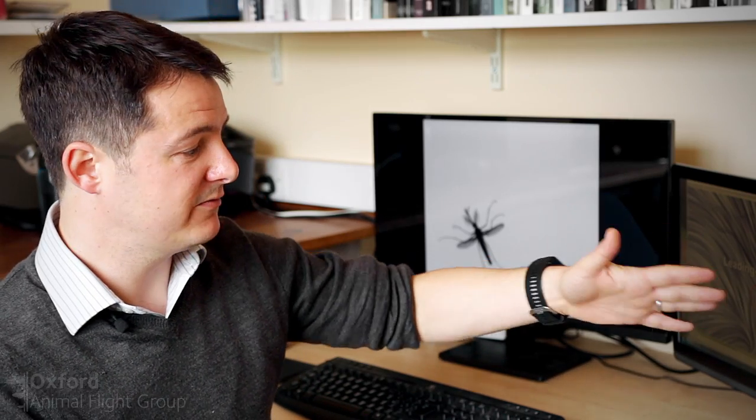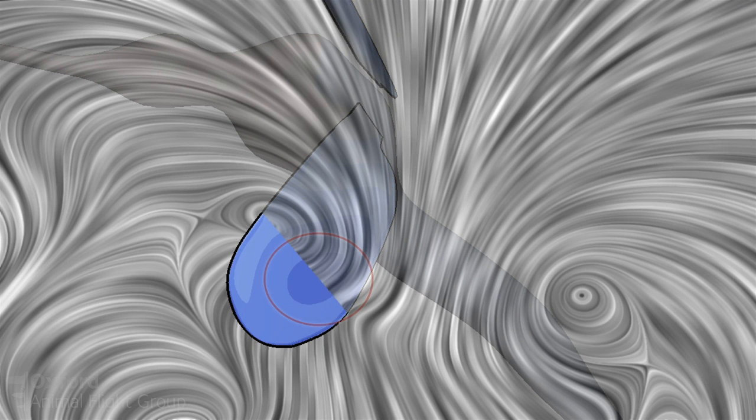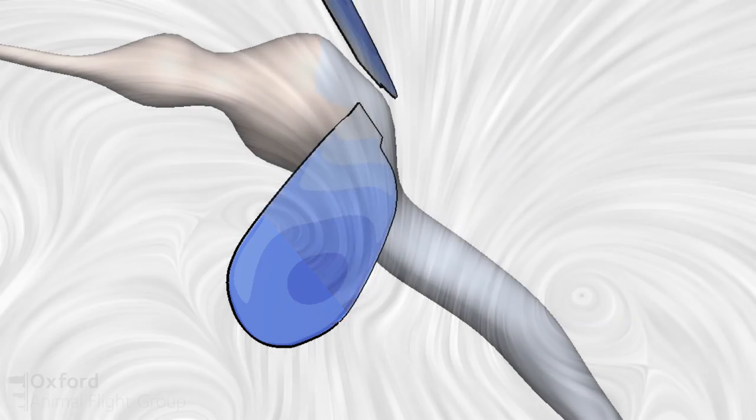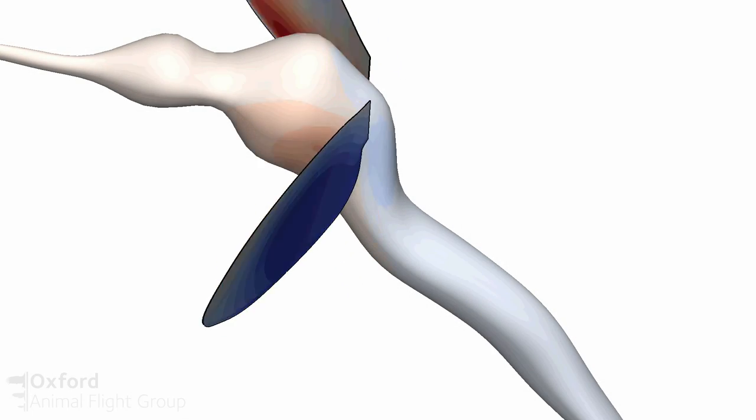And the reason why mosquitoes can do this is down to the really finely tuned and precise rotation of the wing at the end of each half stroke. This also accounts for this other mechanism, rotational drag, where by changing whereabouts on the wing the wing rotates, it can make use of the rotation itself to produce a lift force.